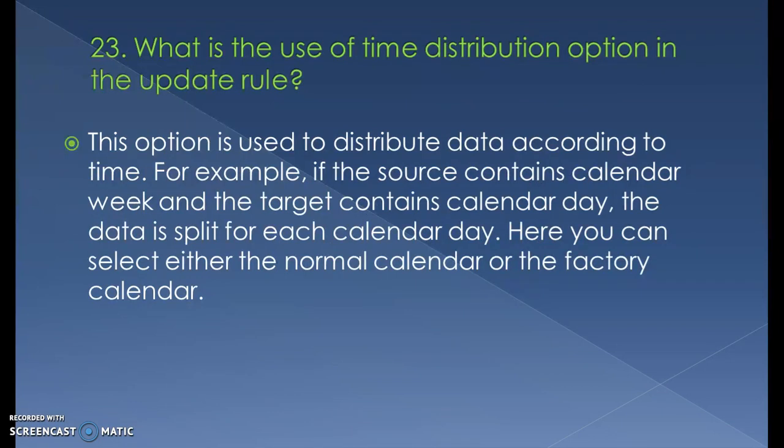What is the use of the time distribution option in update rules? This option is used to distribute data according to time. For example, if the source contains a calendar week and the target contains a calendar day, the data is split for each calendar day. You can select either the normal calendar or the factory calendar.